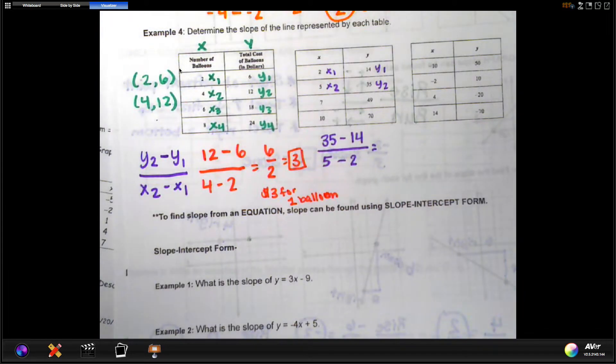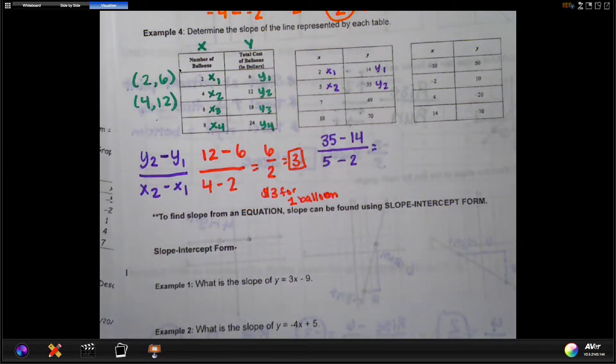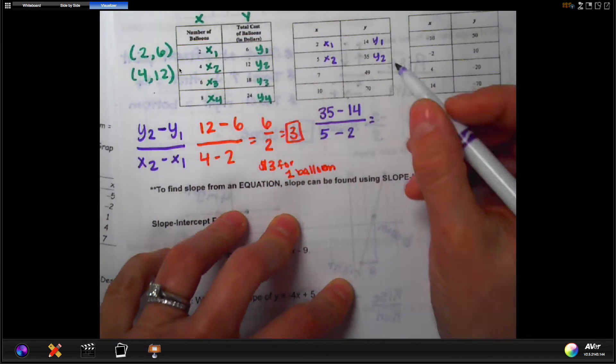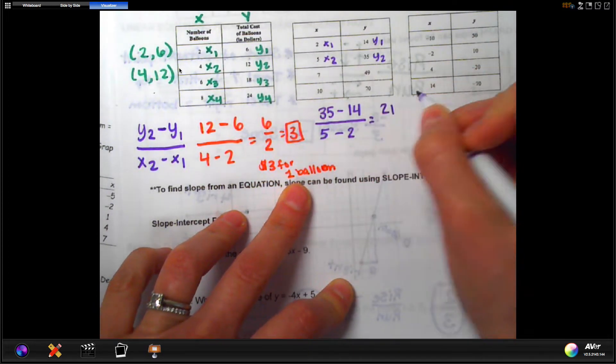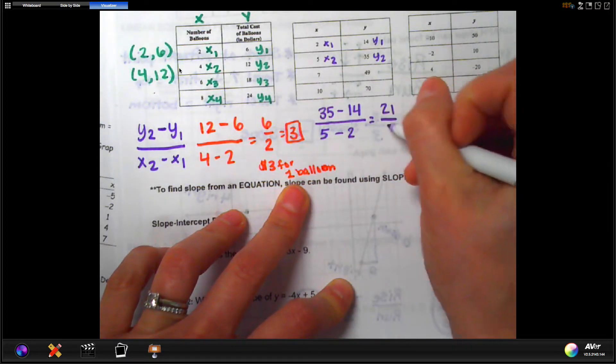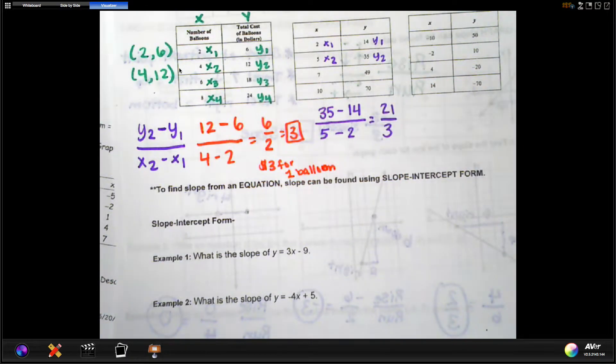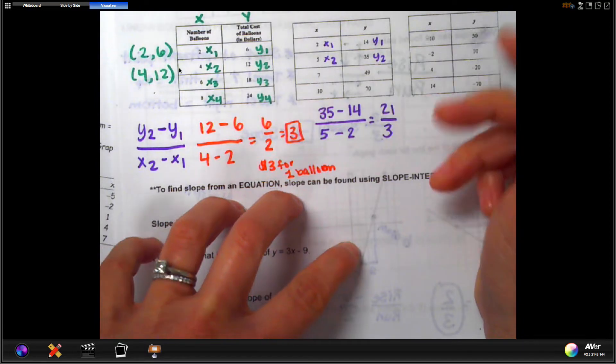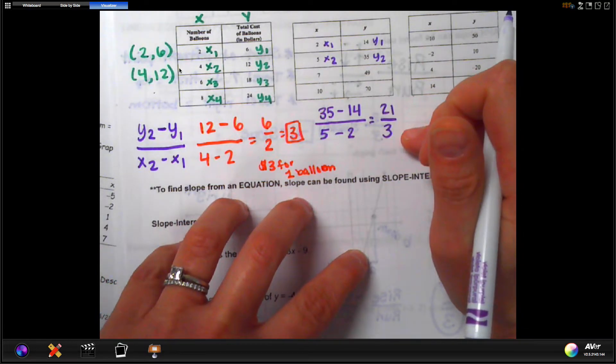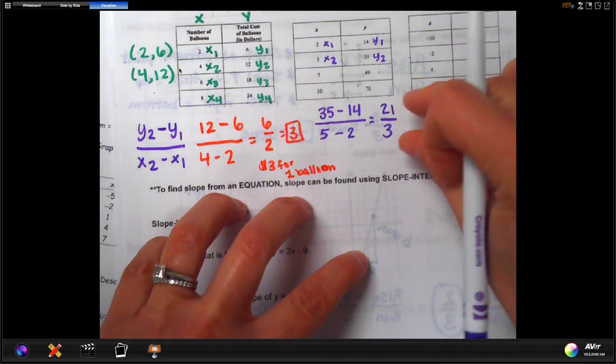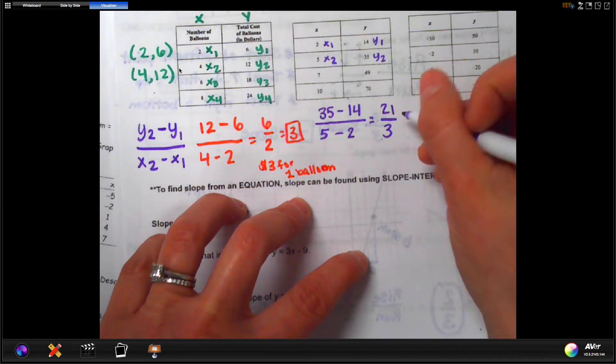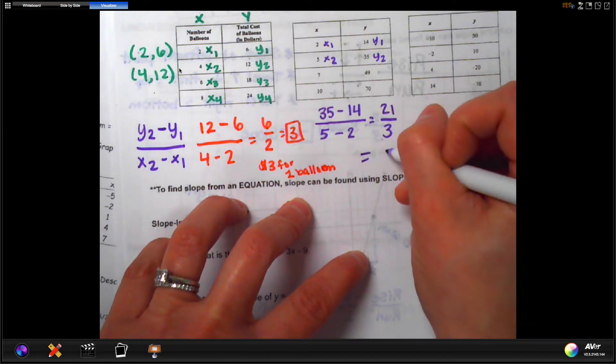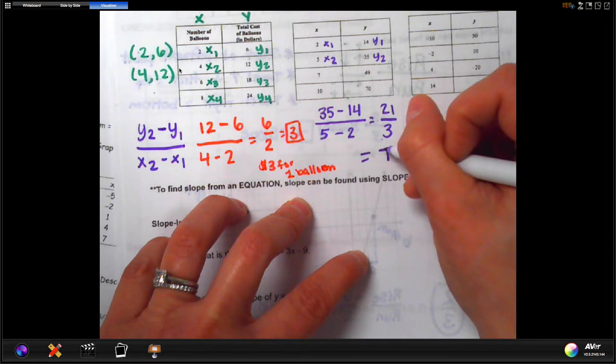Okay, so 35 minus 14 is going to give you, excuse me, checking my work here. Okay, 35 minus 14 is 21. And then 5 minus 2 should give you 3. Now, if you check to divide that, then this does, in fact, divide. And when I say divide, I mean I'm going to do the top divided by the bottom. If I say reduce, that means I'm going to divide both the top and the bottom by the same number. But 21 does divide 3, and that's going to give us 7. Okay, so our slope this time is 7.